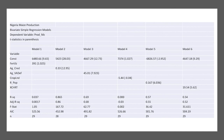Model one includes only fertilizer. Model two includes only agricultural credit. Model three includes only the agricultural value added deflator. Model four includes only cropland. Model five includes only rural population. Model six includes only exchange rate. At the bottom of the table there is a list of indicators to evaluate and compare each model, showing how well each one performs against the alternatives.